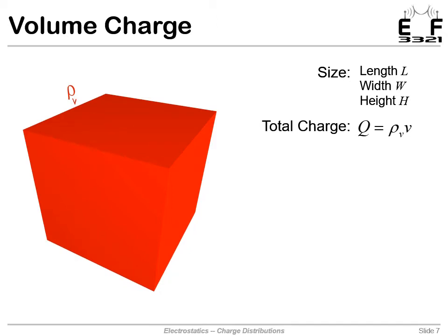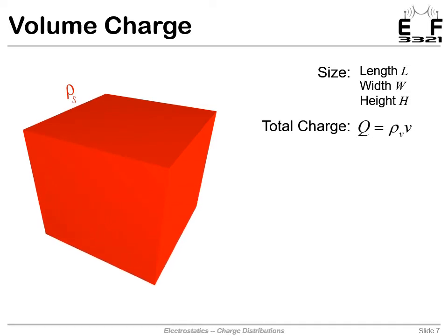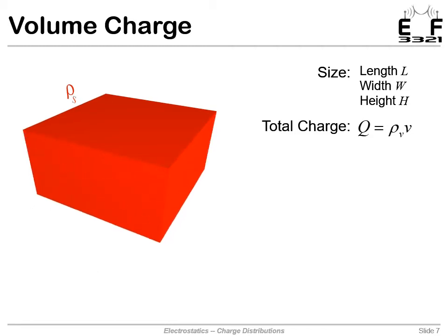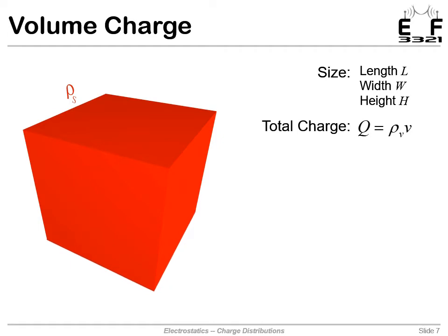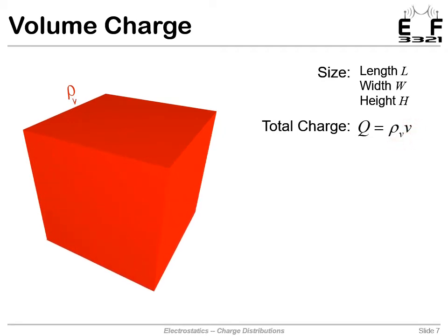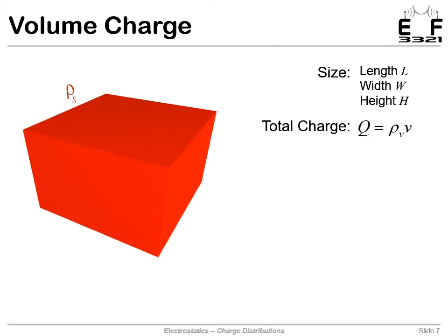It's just that sometimes it's a very good approximation and simplifies the math to assume things are surface charges, line charges, or point charges. But in general, a volume charge is the only thing that is physically real. So if the charge density is uniform, the total charge is simply charge density times the volume. And if that were not uniform, we would have to integrate rho times dv over the volume to get total charge.